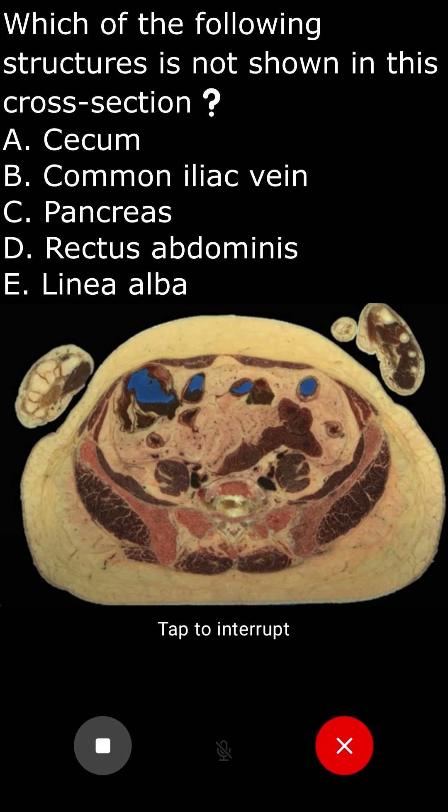Reason 2: Common iliac vein. This vein is located in the pelvis, formed by the union of the internal and external iliac veins. It is visible in cross-sections of the lower pelvis.